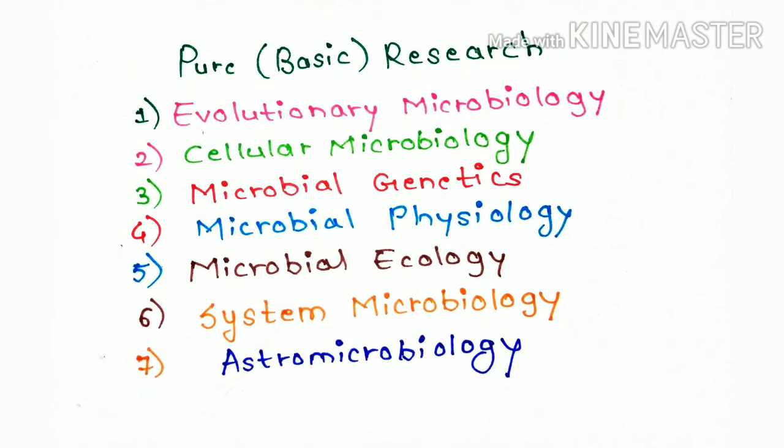In pure or basic research, include the following branches. The first one is evolutionary microbiology, where we talked about the evolution of microorganism. The second is cellular microbiology, where we talked about study of function of microbial cells and their structures. The third is microbial genetics, where we talked about the study of genetical transfer from one organism to the another. The fourth is microbial physiology, where we talked about the metabolism and function of the cell.